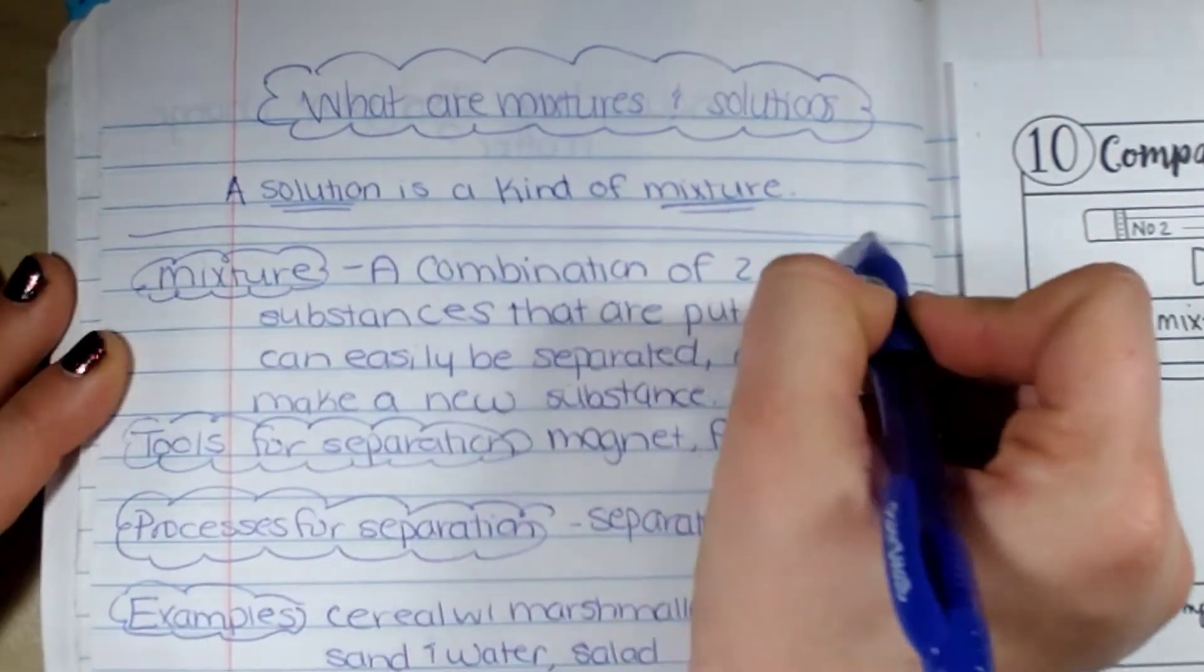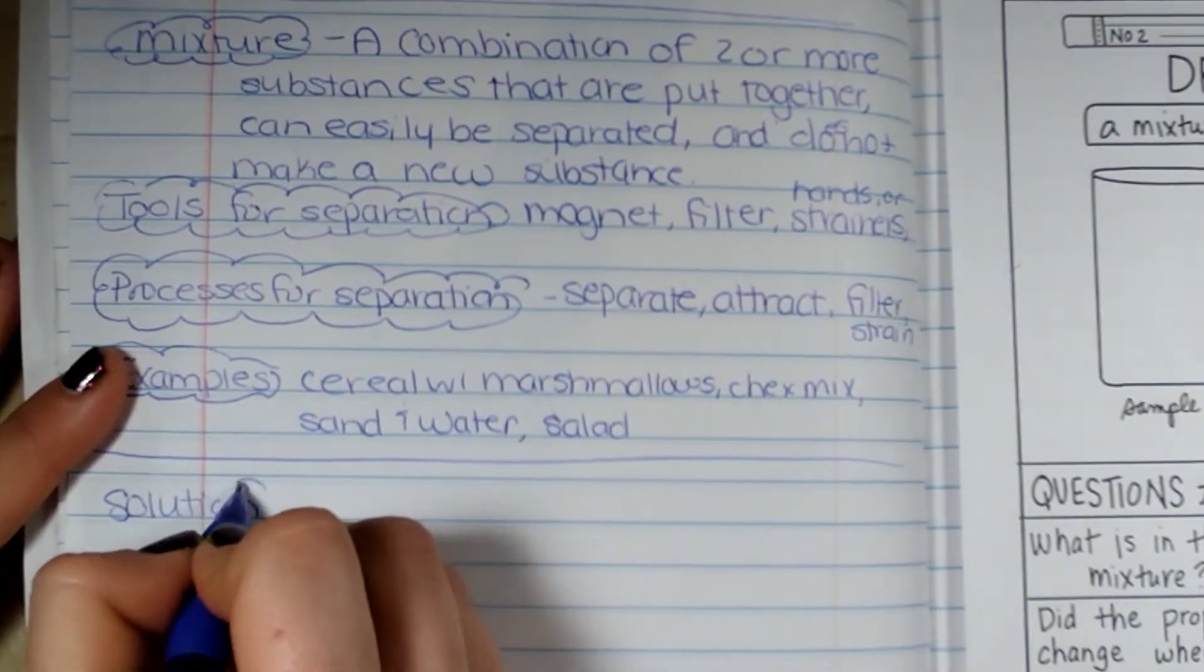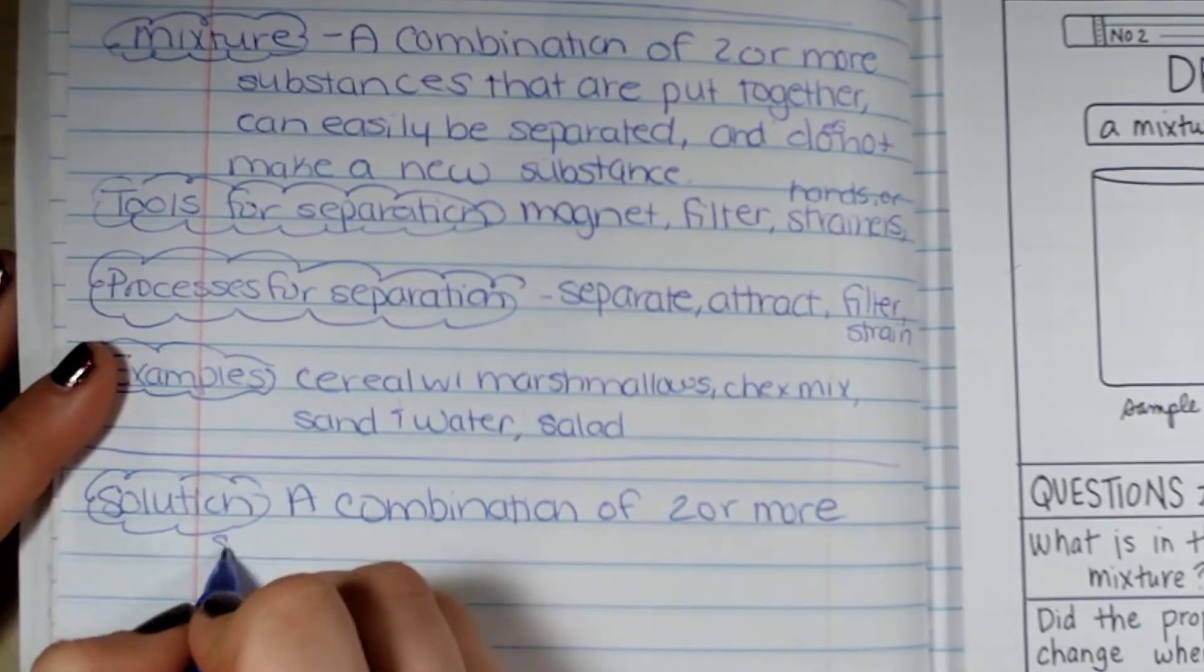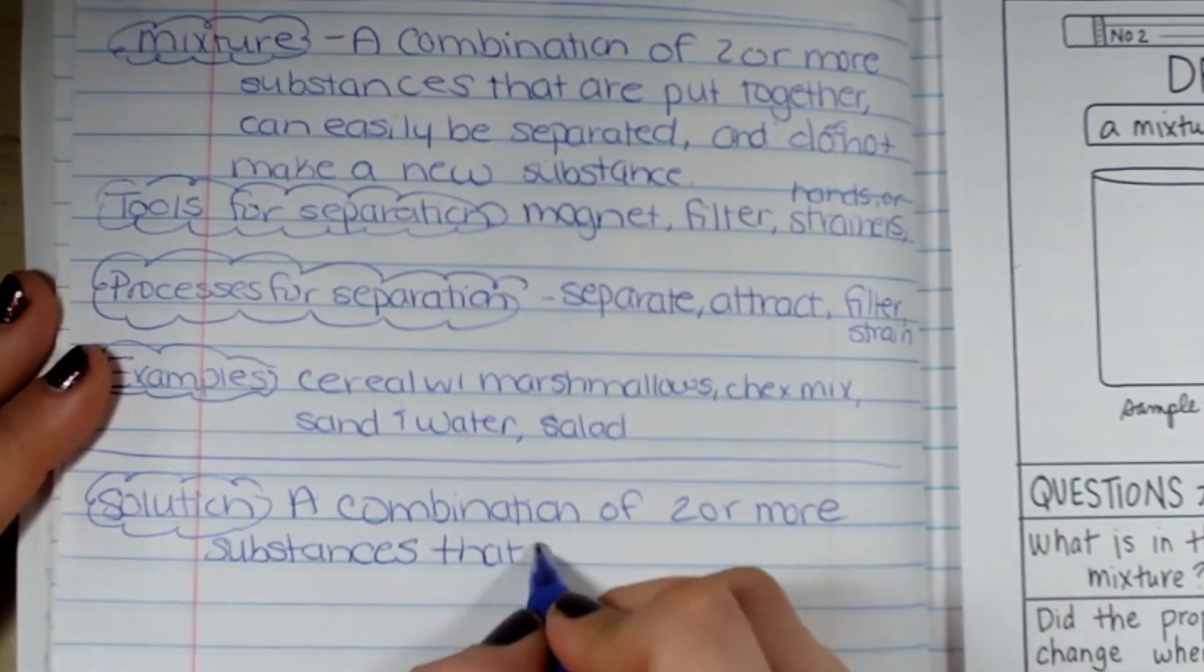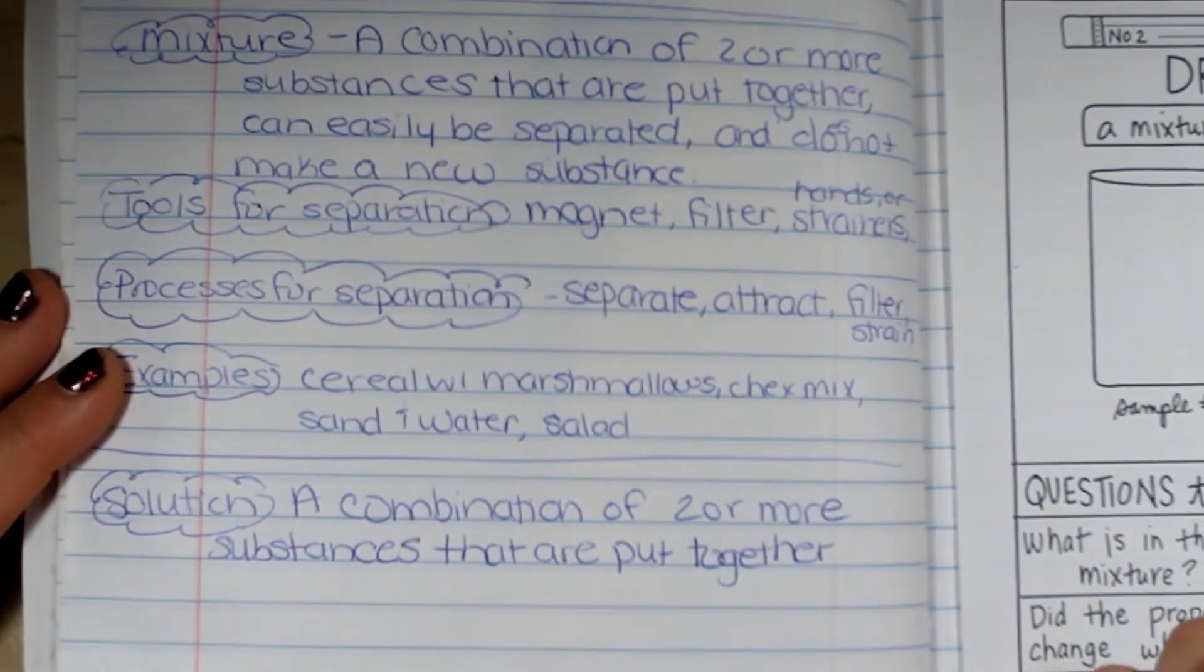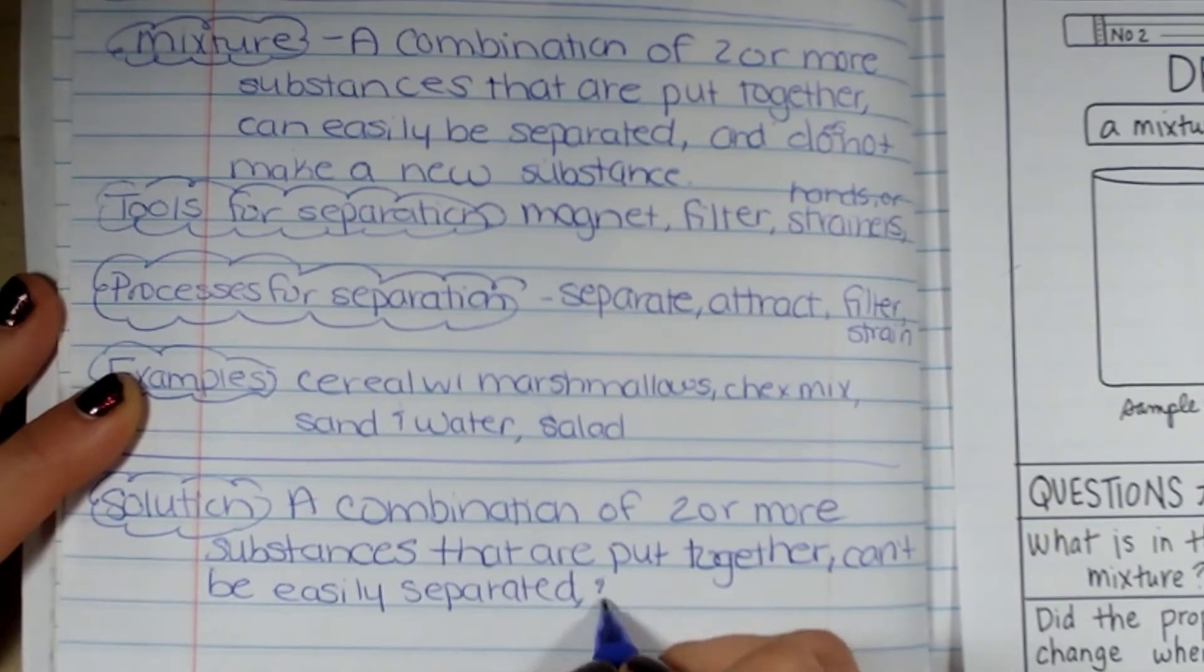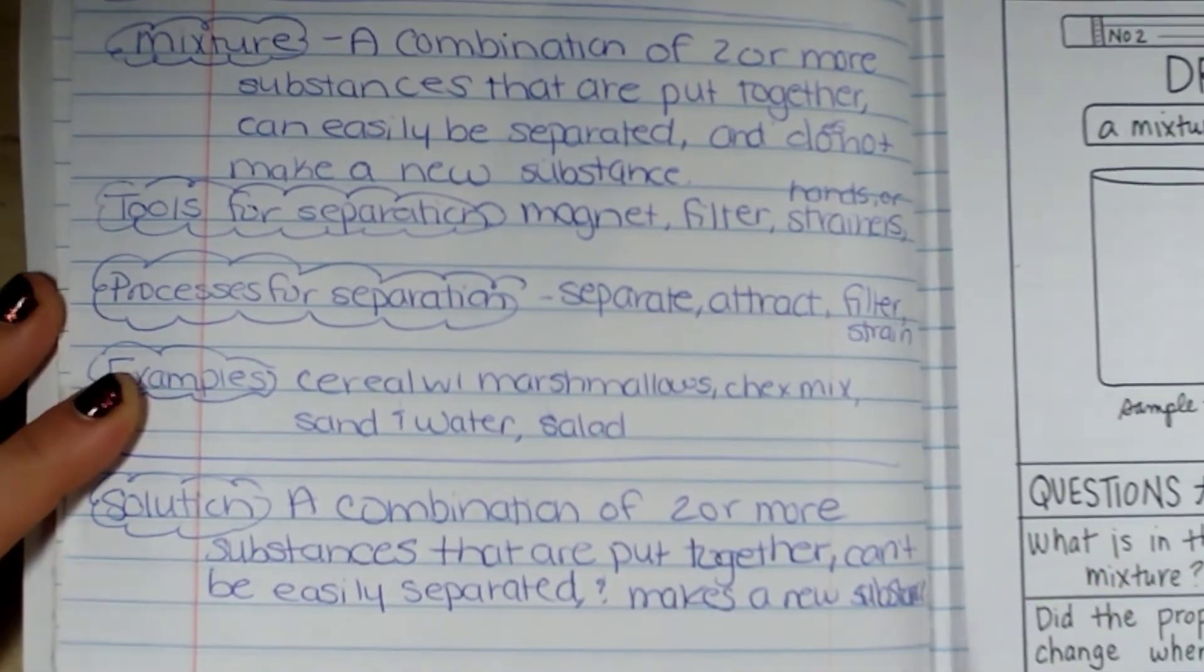Now we're going to talk about specifically that special solution. So a solution is a combination of two or more things just like a mixture because it is a mixture. They can be separated but it will be very difficult. Can't easily be separated and it makes a completely new substance. So it makes a new substance together.